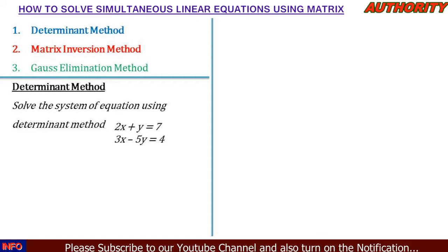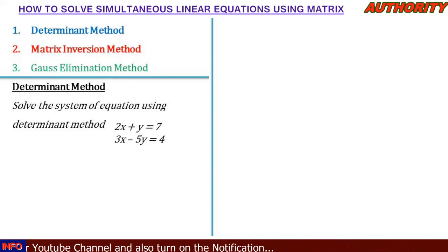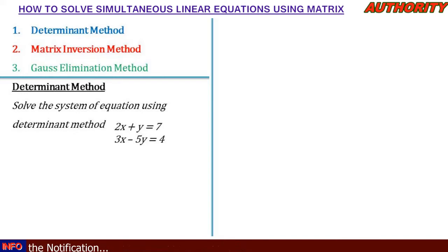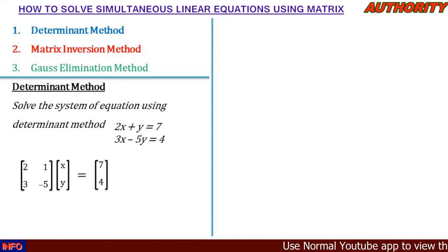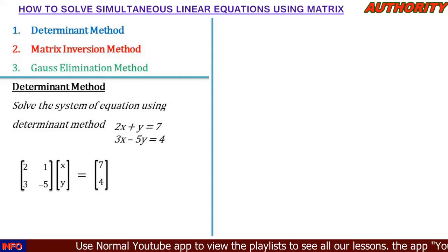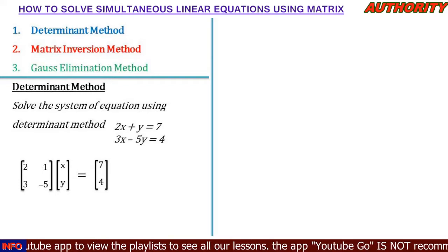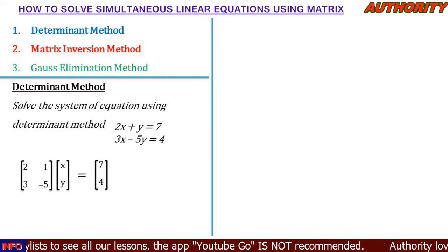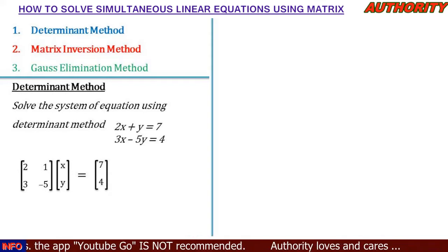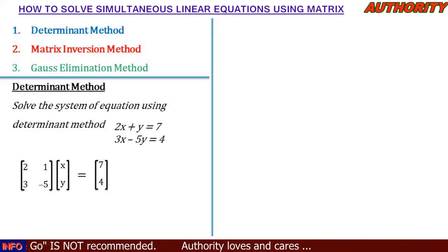We have two equations and two unknowns: 2x + y = 7 and 3x - 5y = 4. The first step is to write these equations in matrix form using their coefficients. The coefficient of x in the first equation is 2, and the coefficient of y is 1. For the second equation we have 3 and -5. So the matrix form is: [2, 1; 3, -5] [x; y] = [7; 4].